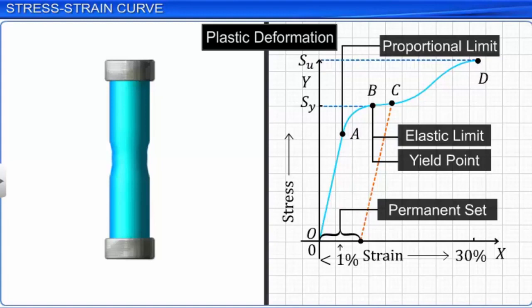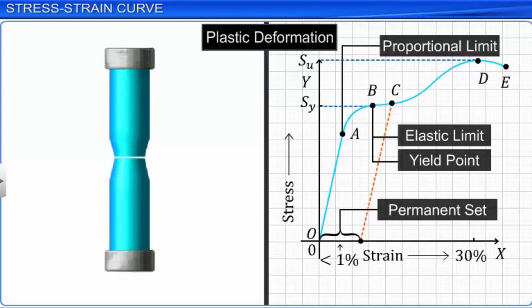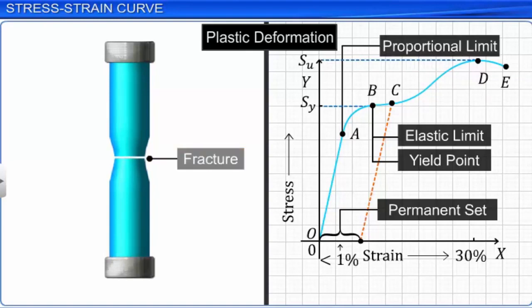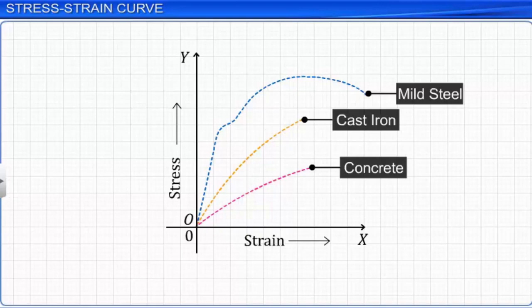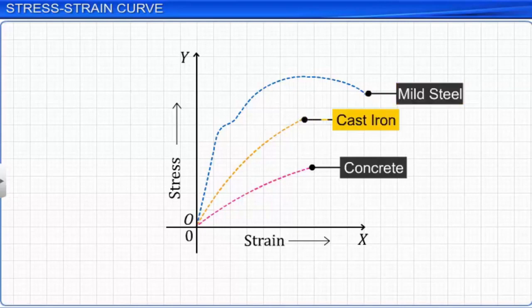The stress-strain curve for different materials is different. For example, the stress-strain curve for mild steel and cast iron look different. The curve for concrete and cast iron shows no plastic deformation, meaning they are brittle and will break suddenly at the point of maximum stress. Mild steel experiences large strains for very little change in stress in the plastic region — such materials have high ductility. Materials that strain by large amounts before fracturing are ductile, whereas those that rupture at low values of strain are brittle. The study of stress-strain curves can help scientists identify appropriate materials to be used in the design of engineering structures.